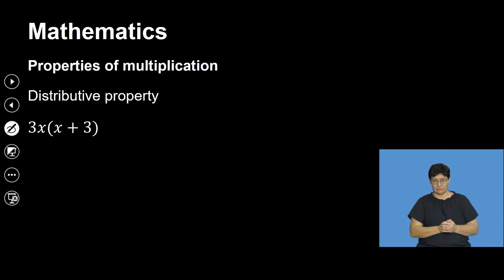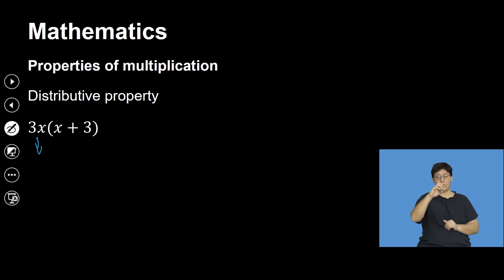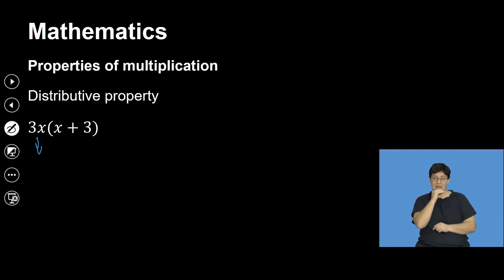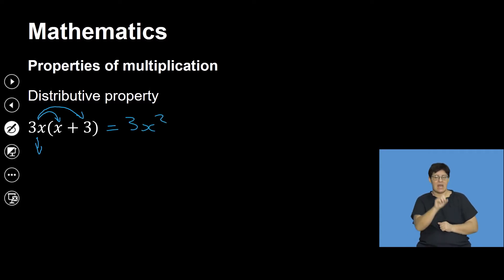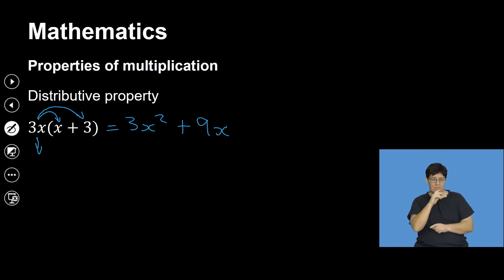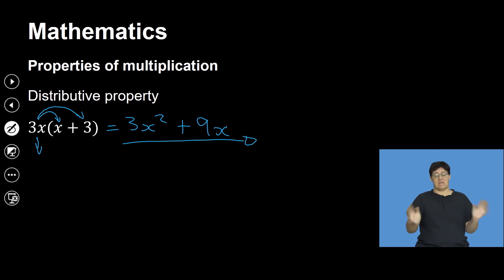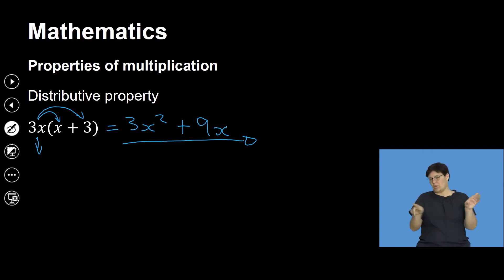Let's look at a typical example. If I have a monomial 3x and a binomial x plus 3, and I'm multiplying the two terms, I will multiply 3x by x first — giving 3x squared — and then 3x by 3, giving 9x. These are unlike terms, so I just leave them as 3x squared plus 9x.